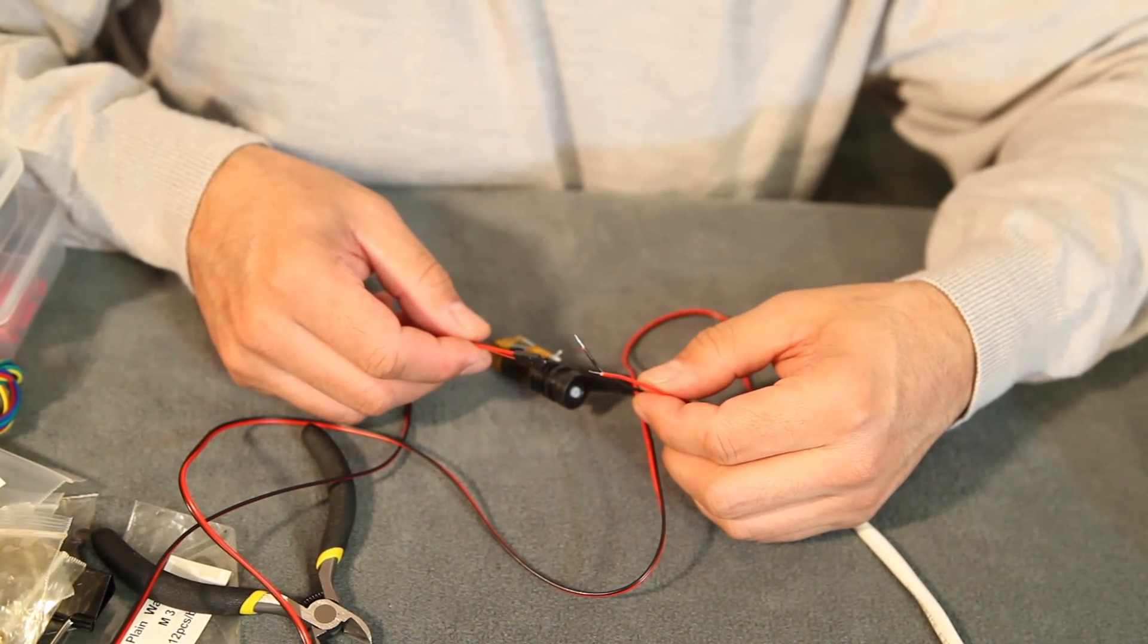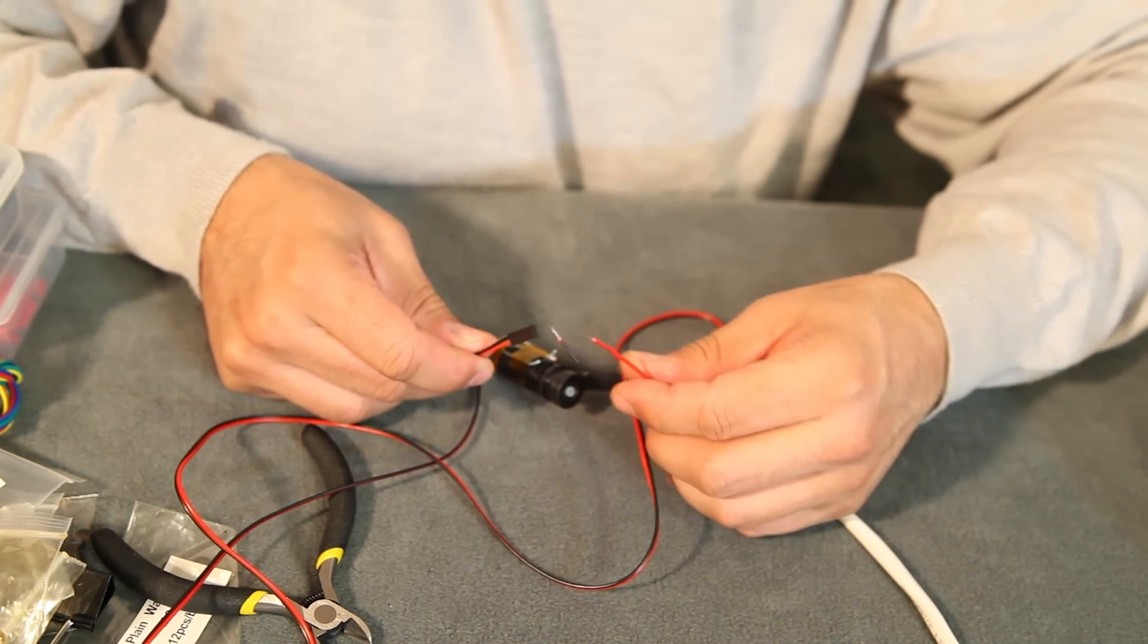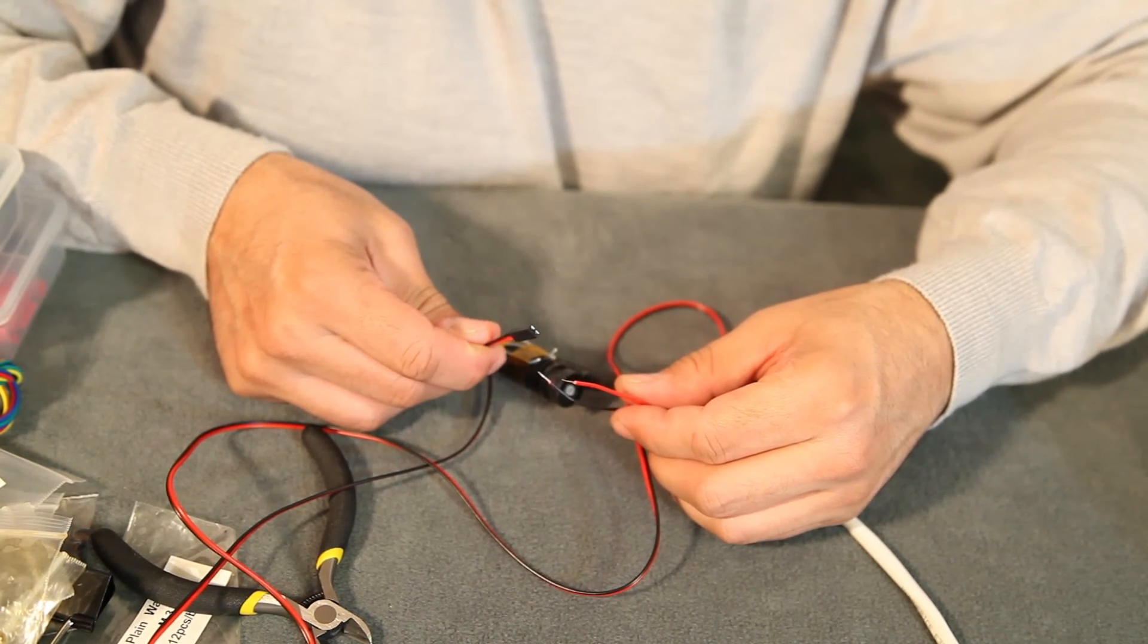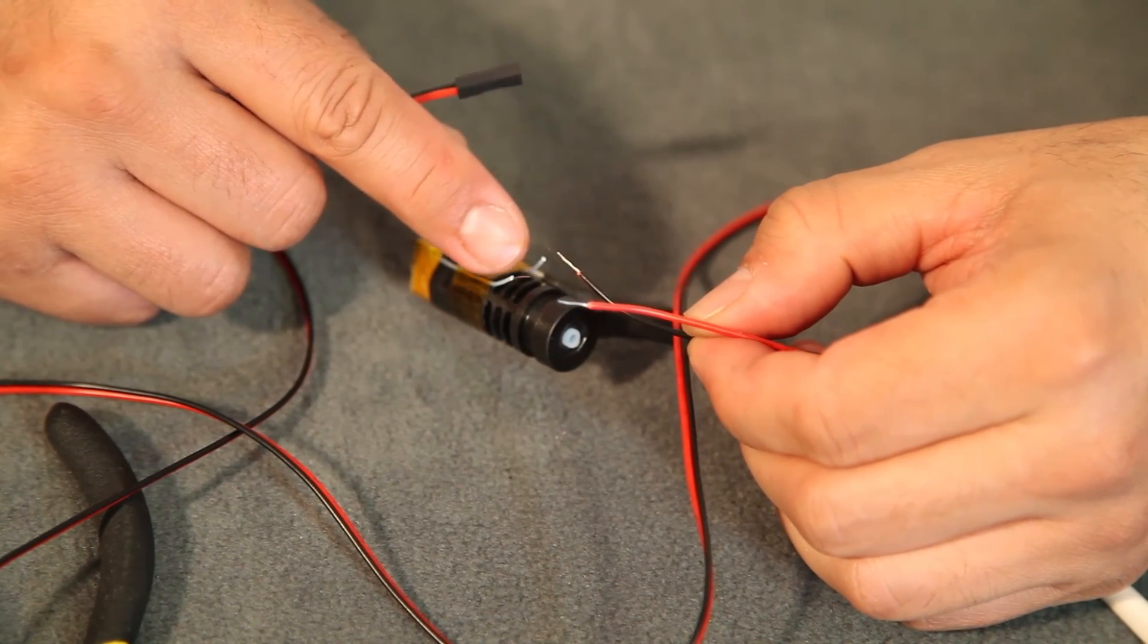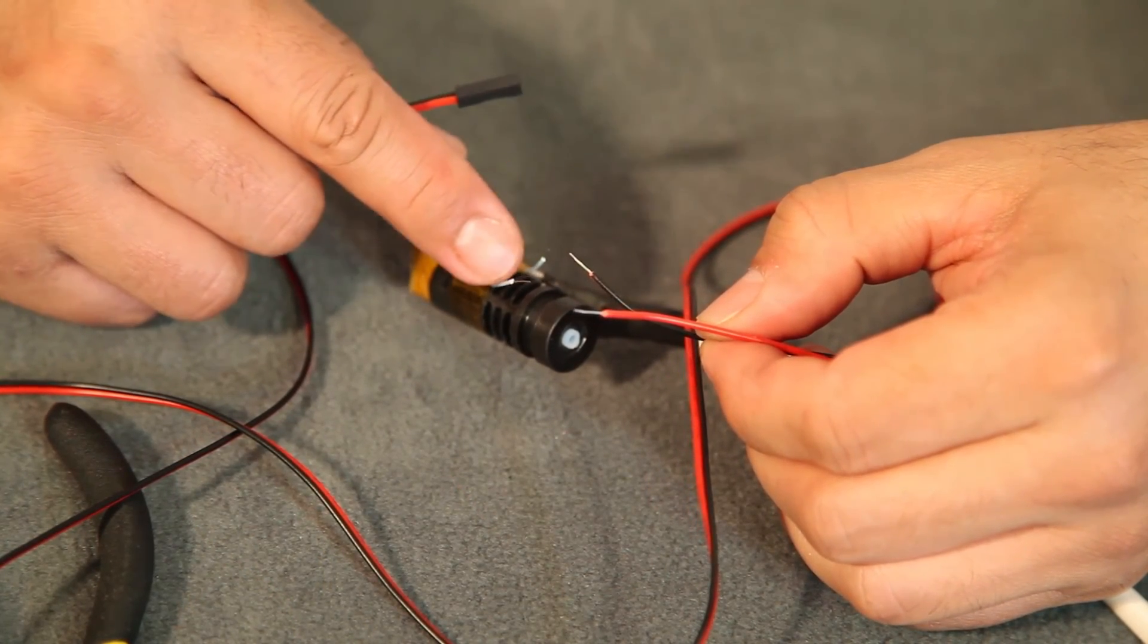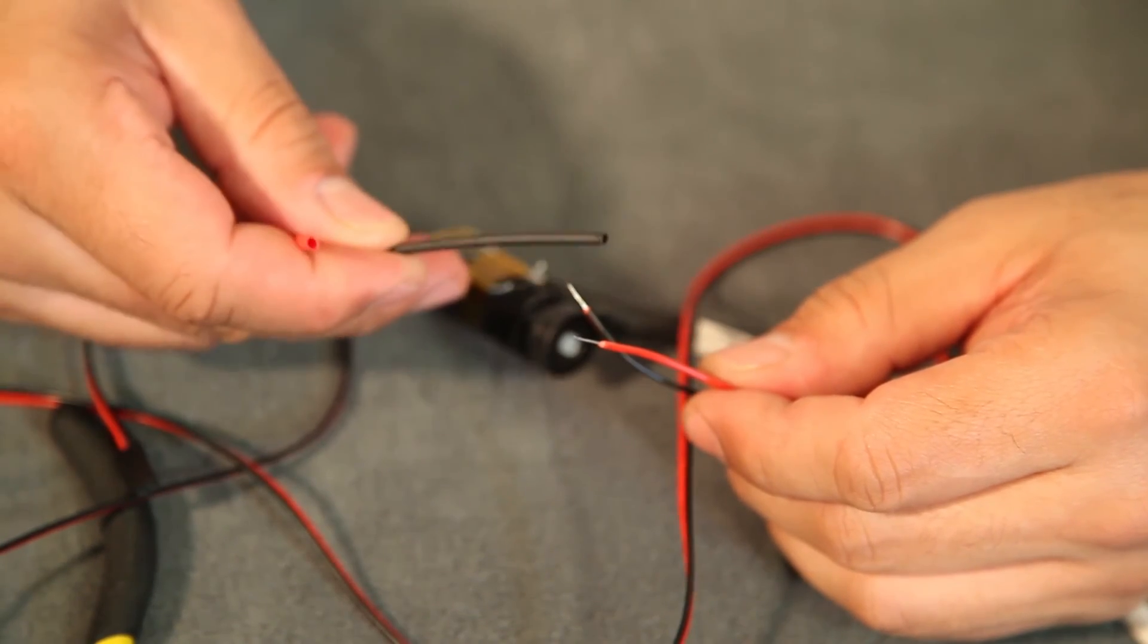So next we're going to solder the thermistor. You're going to utilize one of the connector wires that was provided, red and black with a connector, and it looks like this. You're going to solder the red and black to these two thermistor wires here. It does not matter which you solder to which. And don't forget to add your shrink tubing before you solder.